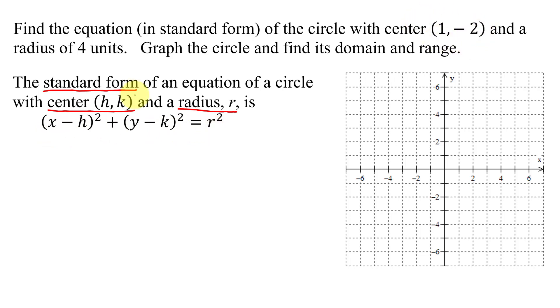In this case, we know the center. The center takes on the variables h and k. So I know the x-coordinate of the center h is going to equal positive 1. The y-coordinate of the center k is going to equal negative 2. And the radius r is going to equal 4 units. So now all I have to do is plug these variables into this equation.